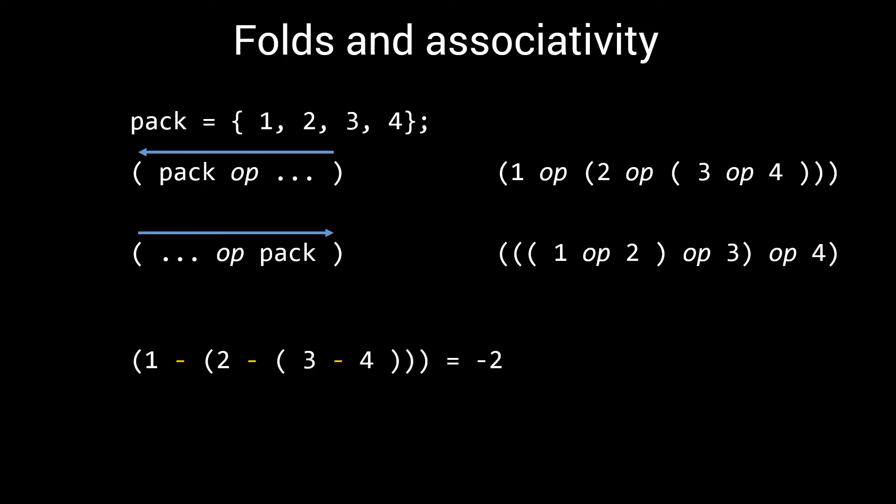3 minus 4 subtracted from 2, and that total then subtracted from 1 equals minus 2. However, 1 minus 2 minus 3 minus 4 equals minus 8. So keep the associativity of your fold expressions in mind when working with operators where the order of evaluation matters.